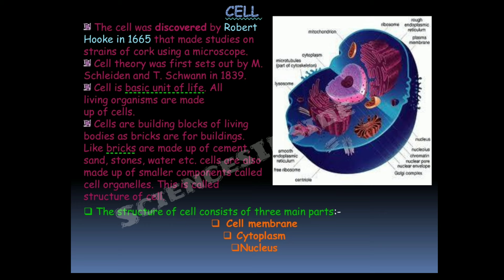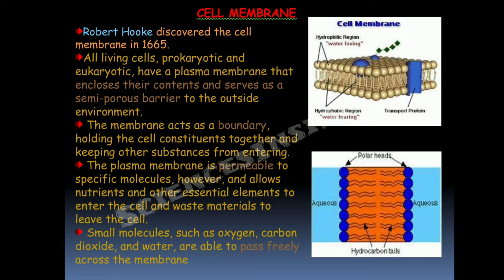Robert Hooke discovered the cell membrane in 1665. All living cells — prokaryotic as well as eukaryotic — have a plasma membrane that encloses their contents and serves as a semi-porous barrier to the outside environment. This plasma membrane acts as a boundary holding the cell constituents together and keeping other substances from entering.